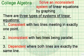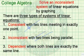There are three types of systems of linear equations. First, there's a consistent system with two lines meeting in exactly one point. The second variety is inconsistent with two lines being parallel and not meeting at all.